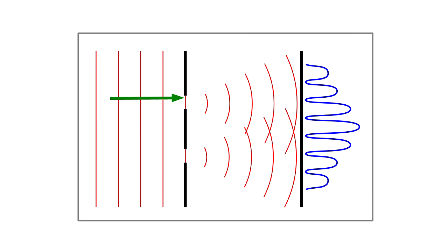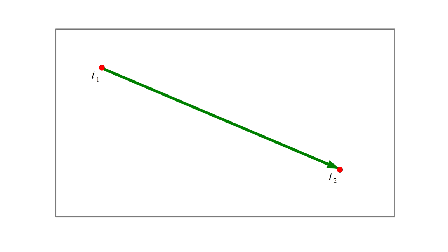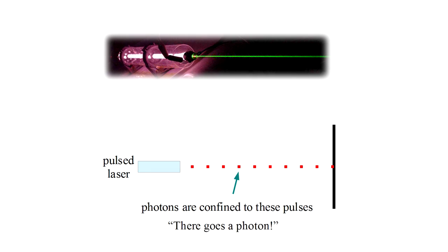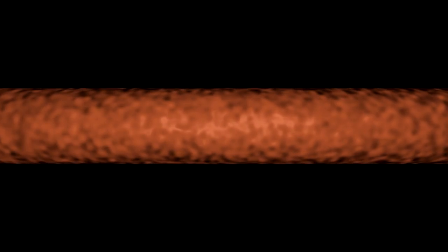We might still argue that photons can be made to follow well-defined paths. If the wave intensity gives the probability of finding a photon somewhere, let's just make that intensity, hence probability, zero everywhere except along some well-defined path. For instance, in a laser beam, photon positions are constrained in two dimensions, and ideally there are no photons outside the beam diameter. And if we rapidly turn the laser on and off, we create pulses that limit position in the third dimension. Then by following a pulse, we can map out the path of one or more photons.